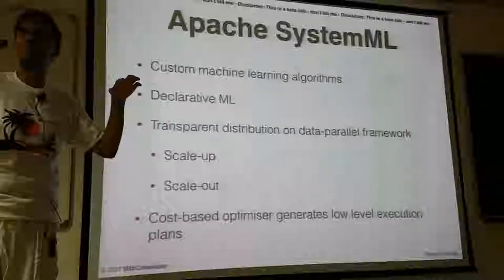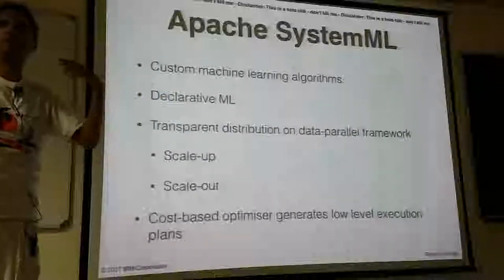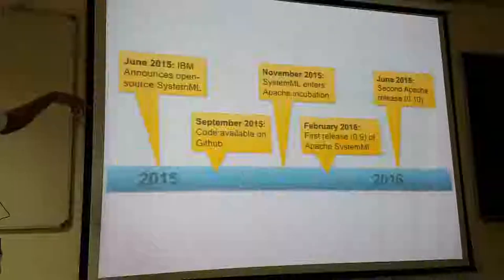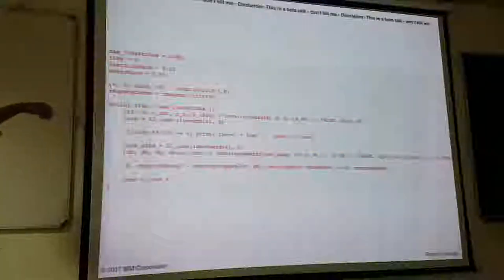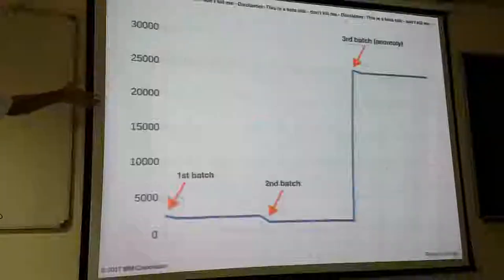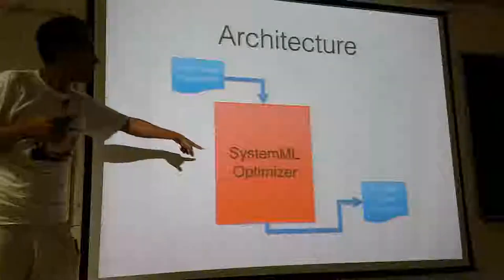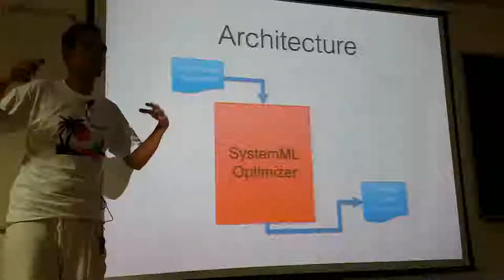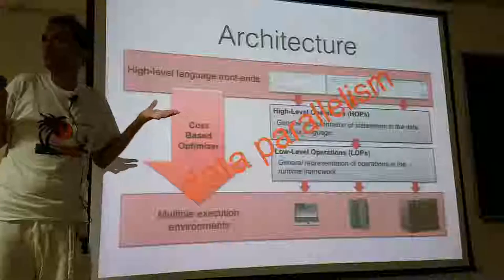In TensorFlow you define a static execution graph using Python code. In SystemML — which is actually even older than Apache Spark — you have a domain-specific language in R syntax and an optimizer that takes statistics of your data into account and creates an optimal execution graph.